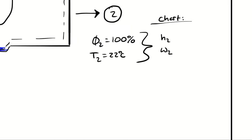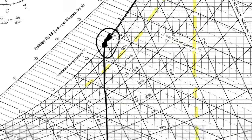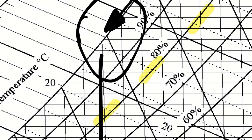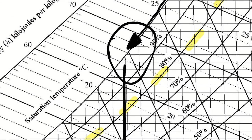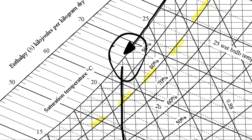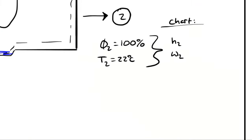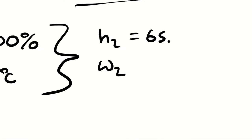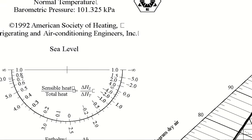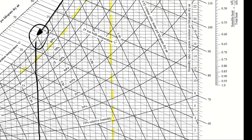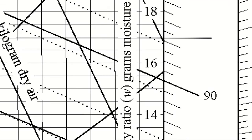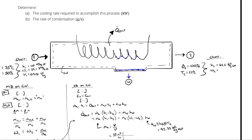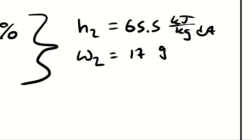At state 2, relative humidity is 100% and temperature is 22 degrees Celsius. From the chart, h₂ is about 65.5 kJ/kg of dry air, and ω₂ is essentially 17 grams of water per kilogram of dry air. Now we have everything we need to finish the question.